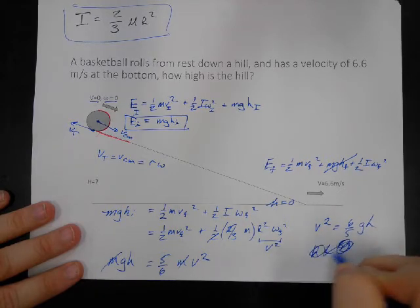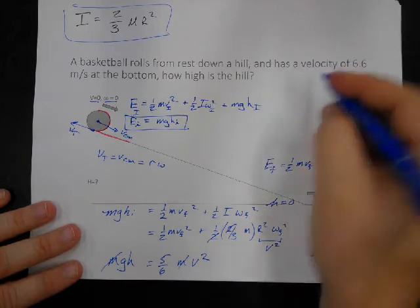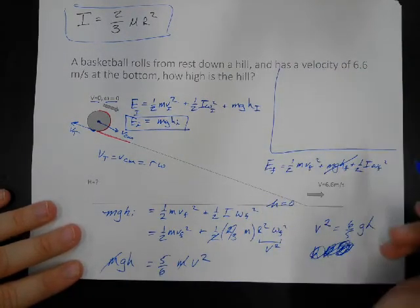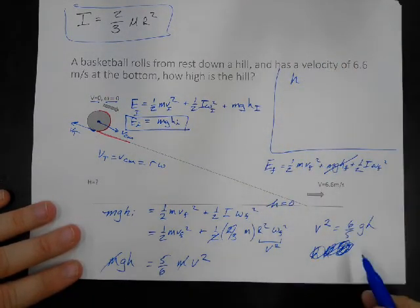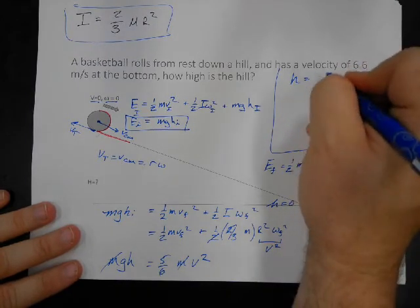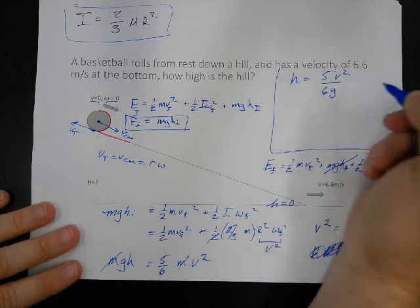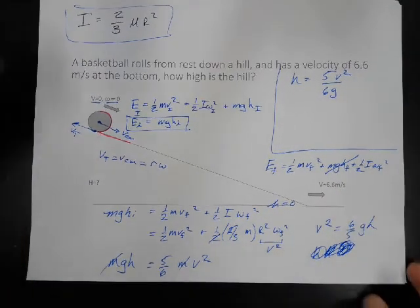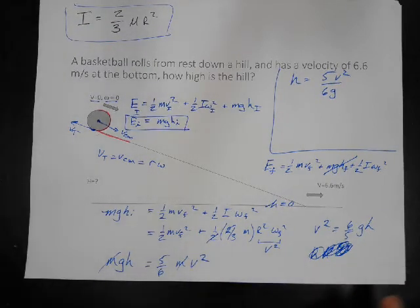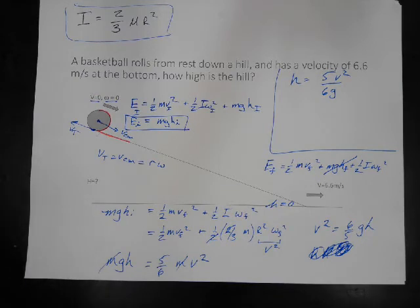So, we're going to solve the problem, actually do the math here. So, what we're going to do is plug in the numbers that we have is v squared and g and get h. Why did it fall asleep?